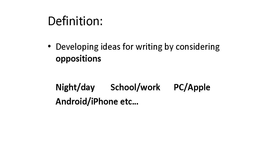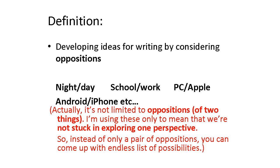We tend to see oppositions such as night and day, sun and moon, male and female as things that we cannot reconcile. However, following Peter Elbow, I use the term oppositions only to mean that we are not stuck to one idea — we don't feel satisfied with only one idea, but explore other possibilities. And the easiest way to find possibilities is through finding the opposition.